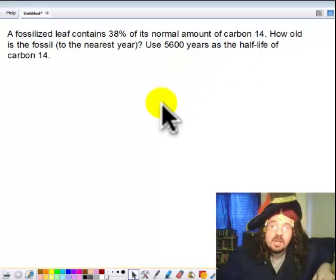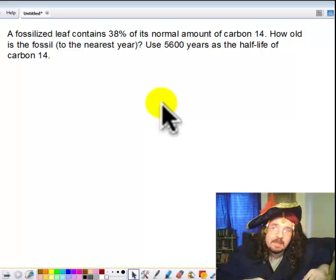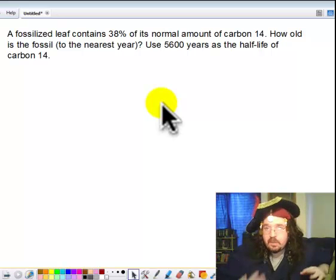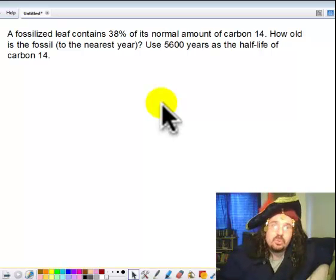And remember, the way that this works is, things alive have carbon-14 in them, and when they die the carbon-14 starts to return to its state of carbon-12, it loses neutron.